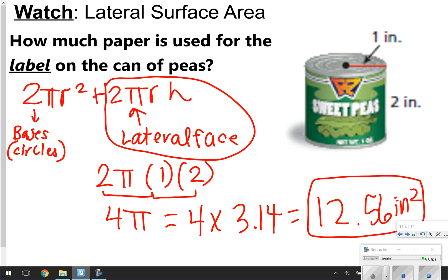Okay, so with lateral surface area, you are only using the second half of the formula because the first half of the formula deals with the circles. We only need the lateral surface area, which is label. Think of lateral surface labels.